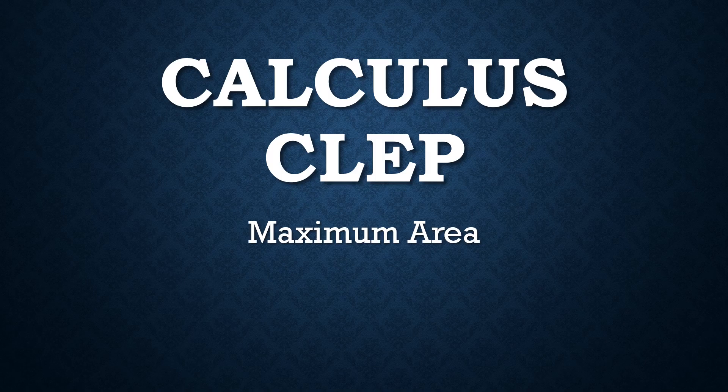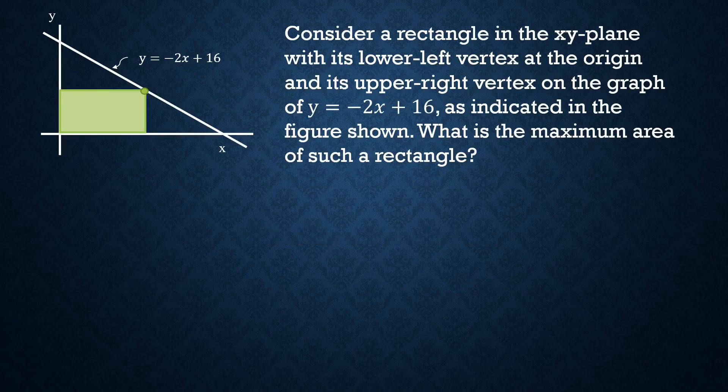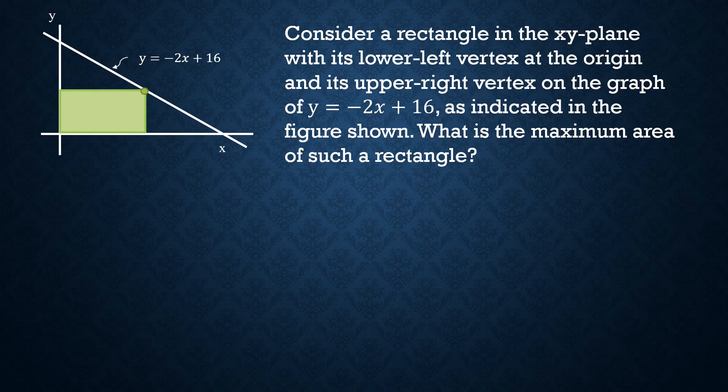In this calculus club video, we're going to discuss how to maximize an area. This problem says: consider a rectangle in the xy-plane with its lower-left vertex at the origin and its upper-right vertex on the graph of y equals negative 2x plus 16, as indicated in the figure shown. What is the maximum area of such a rectangle?